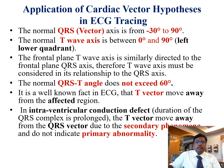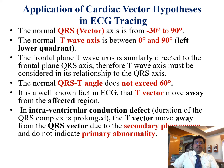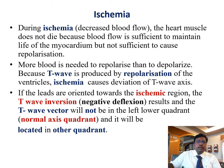Application of cardiac vector hypothesis in ECG tracing: the normal QRS vector axis is from minus 30 to 90 degrees. The normal T axis is from 0 to 90 degrees in the left lower quadrant. The frontal plane T vector axis is similarly directed to the frontal plane QRS axis, so the T axis must be considered in relationship to the QRS axis. The normal QRS-T angle does not exceed 60 degrees. In intraventricular conduction defect, the T vector moves away from the QRS vector due to secondary phenomena and does not indicate primary abnormality.